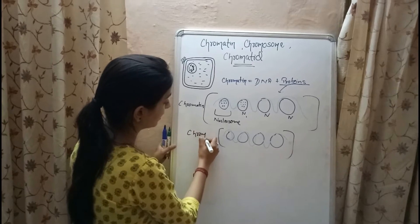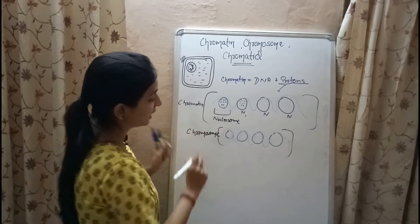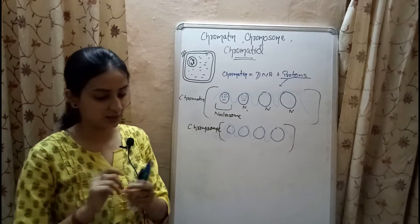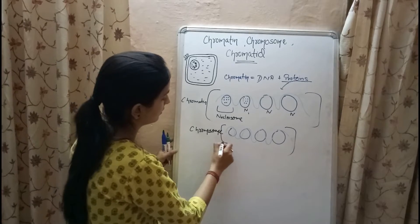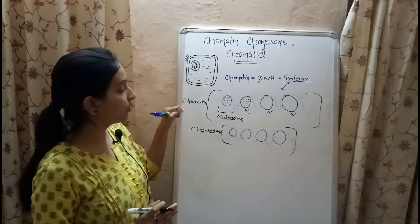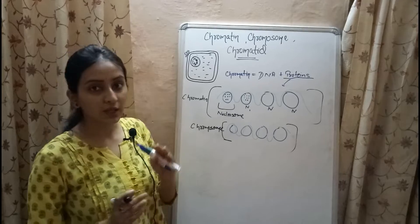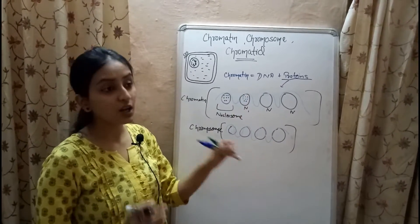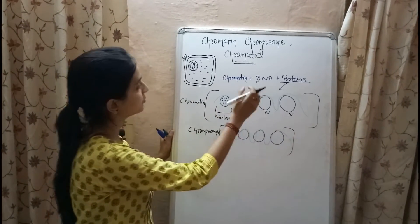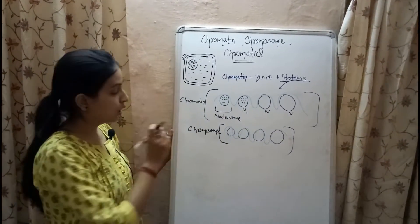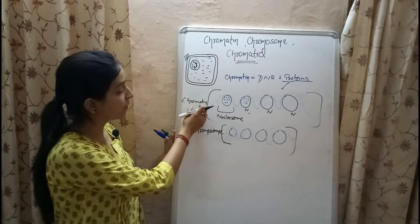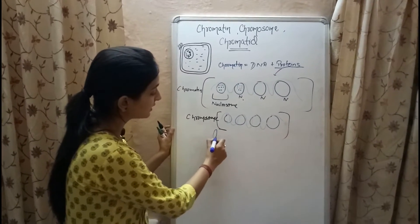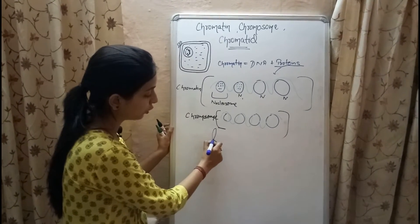The basic idea behind the condensation of chromatin material to form chromosomes is to allow easy replication of DNA. To differentiate: chromatin are the macromolecules containing DNA and histone proteins — the repeated nucleosome structures present in the nucleus — whereas a chromosome is the thickened or condensed chromatin formed during cell division.